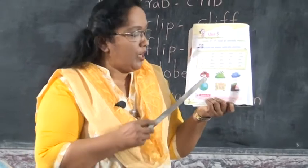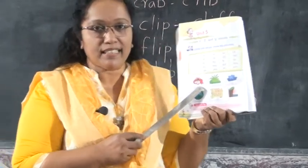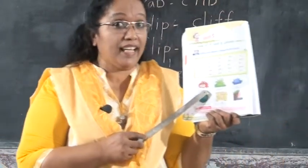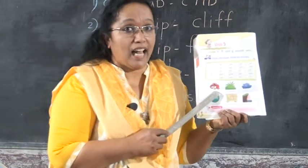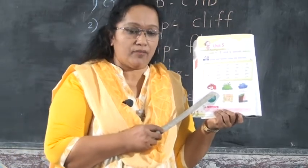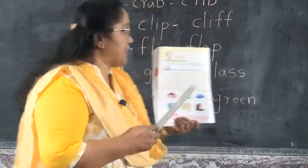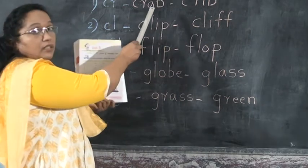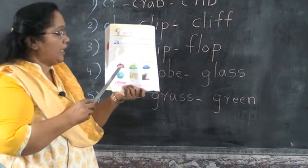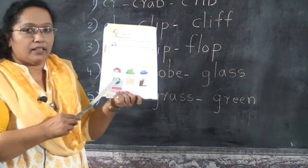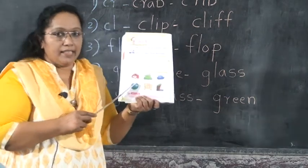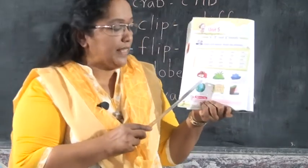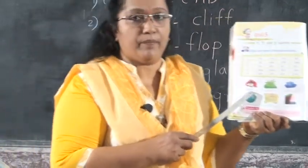What is this? What is this? Do you like crab curry? Crab. What's the spelling of crab? C-R-A-B. C-R-A-B. Write down here. Write the spell crab. Write it here: C-R-A-B.